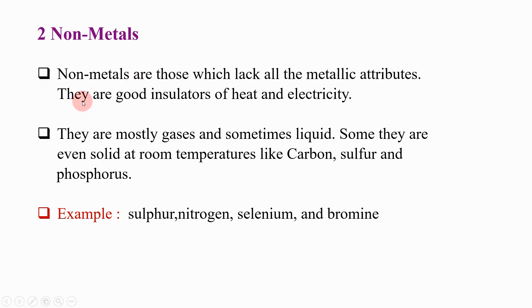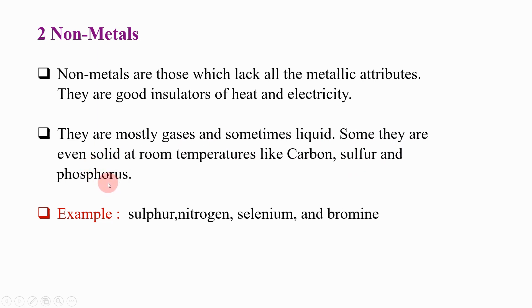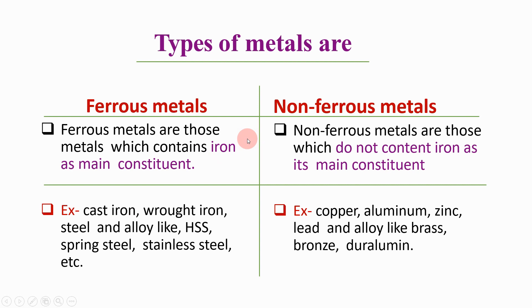Non-metals are good insulators of heat and electricity, meaning they are very poor conductors of heat and electricity — exactly the opposite of metals. They are mostly gases, sometimes liquids, and sometimes solids at room temperature, like carbon, sulfur, and phosphorus. Examples of non-metals include sulfur, nitrogen, selenium, and bromine.